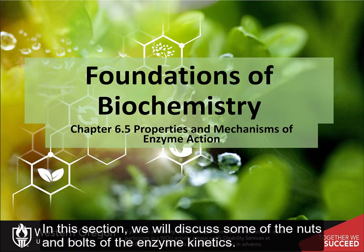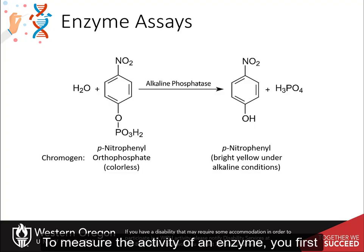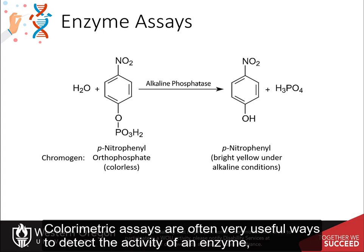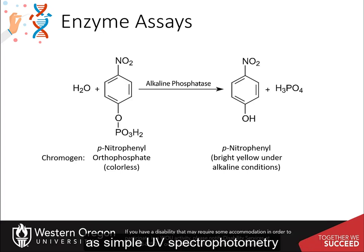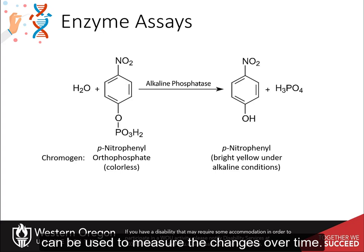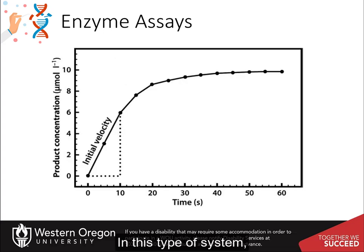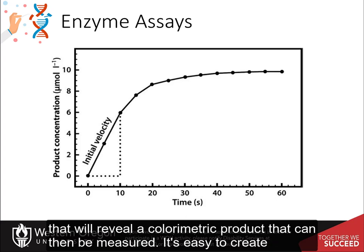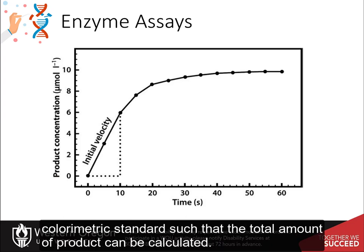In this section, we will discuss some of the nuts and bolts of enzyme kinetics. To measure the activity of an enzyme, you first need to have an assay that allows you to detect the activity. Colorimetric assays are often very useful ways to detect the activity of an enzyme, as simple UV spectrophotometry can be used to measure the changes over time. A reaction can be started by the addition of the enzyme to a cuvette containing a substrate that will reveal a colorimetric product that can then be measured. It's easy to create a colorimetric standard such that the total amounts of product can be calculated.